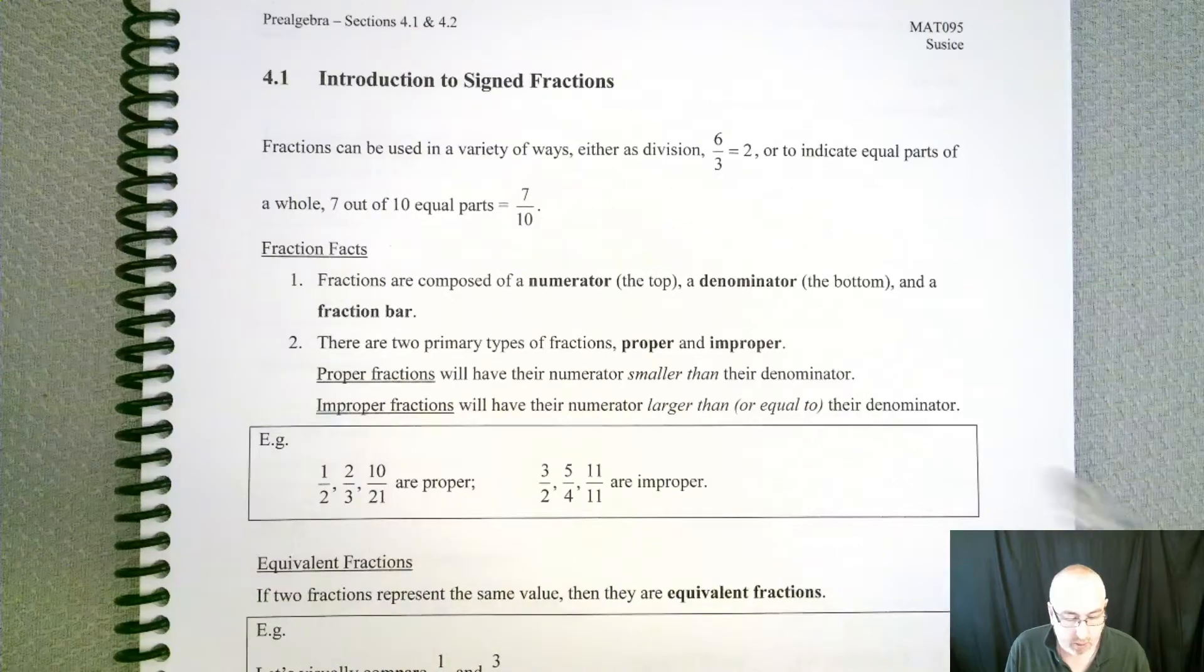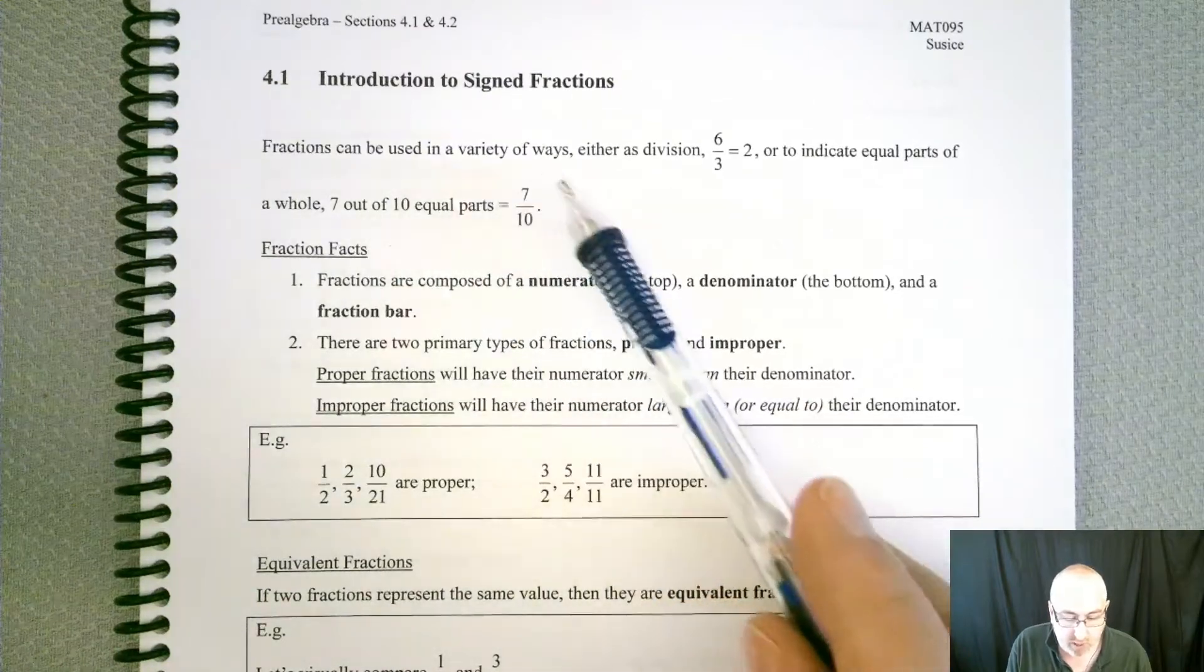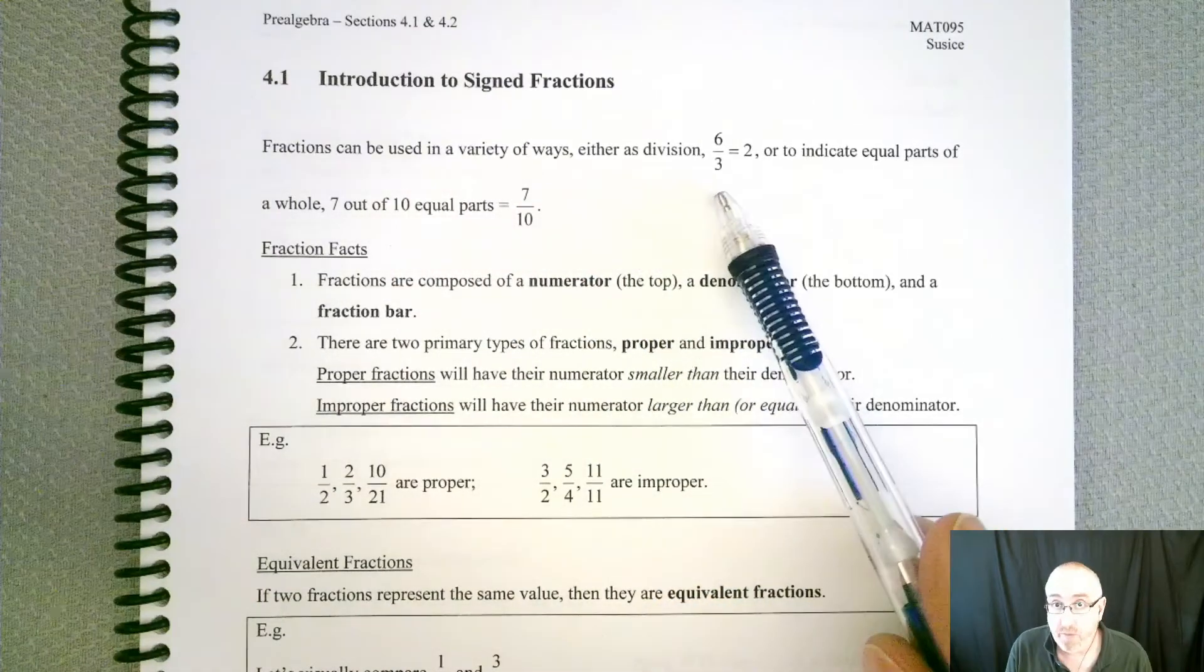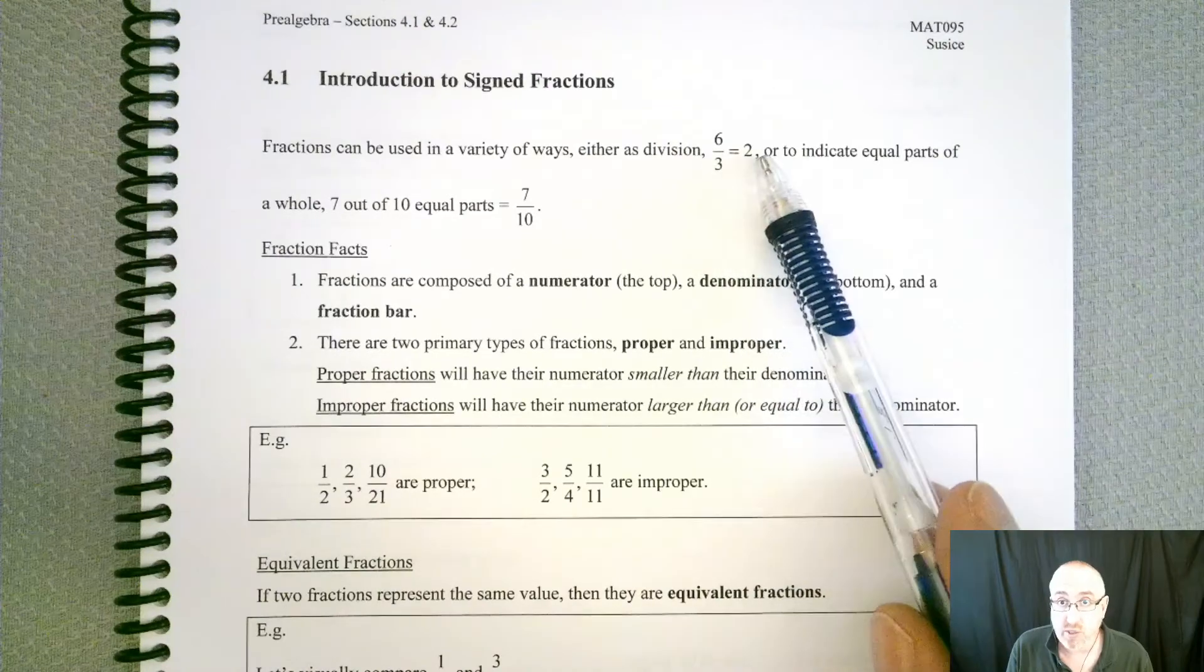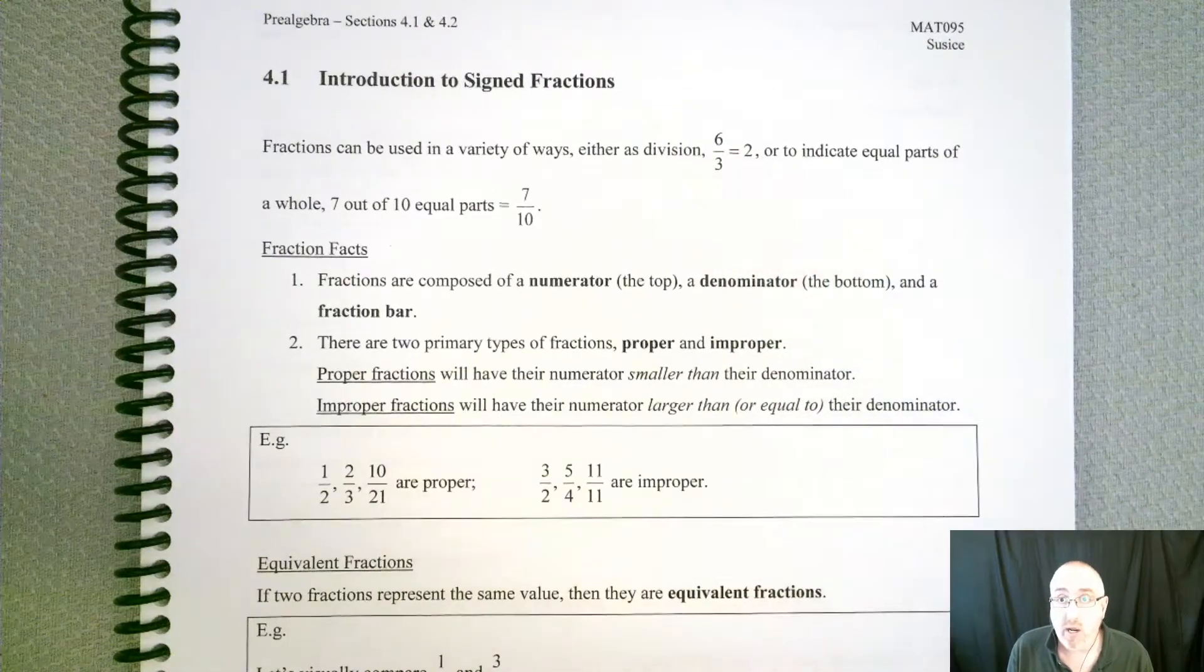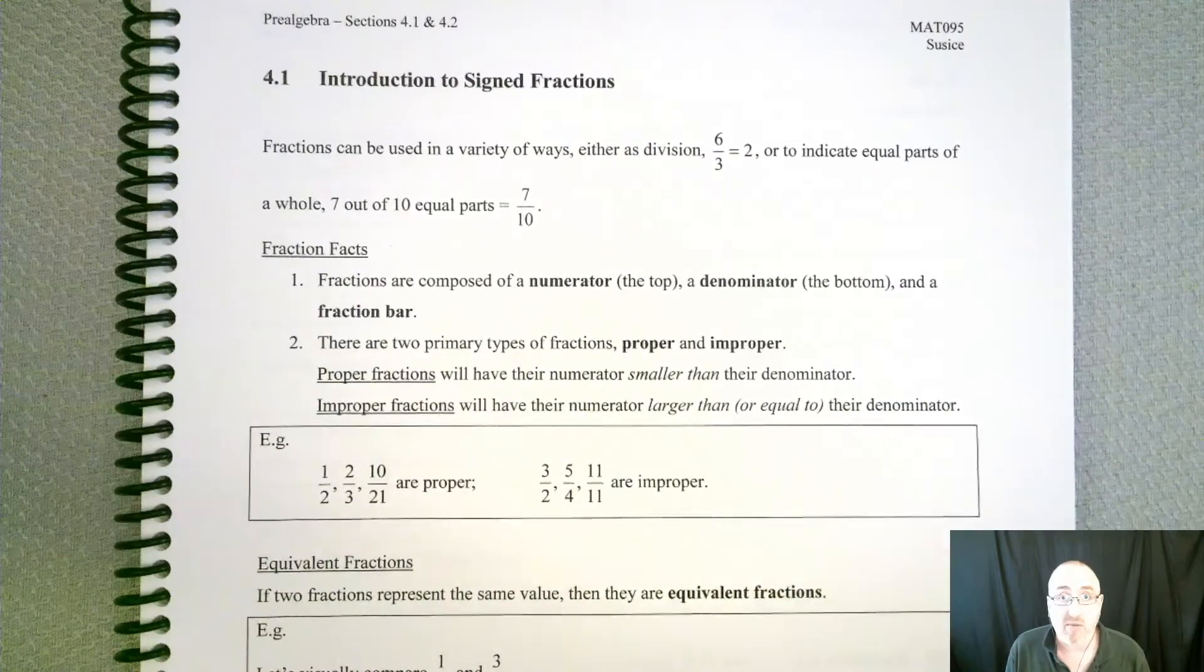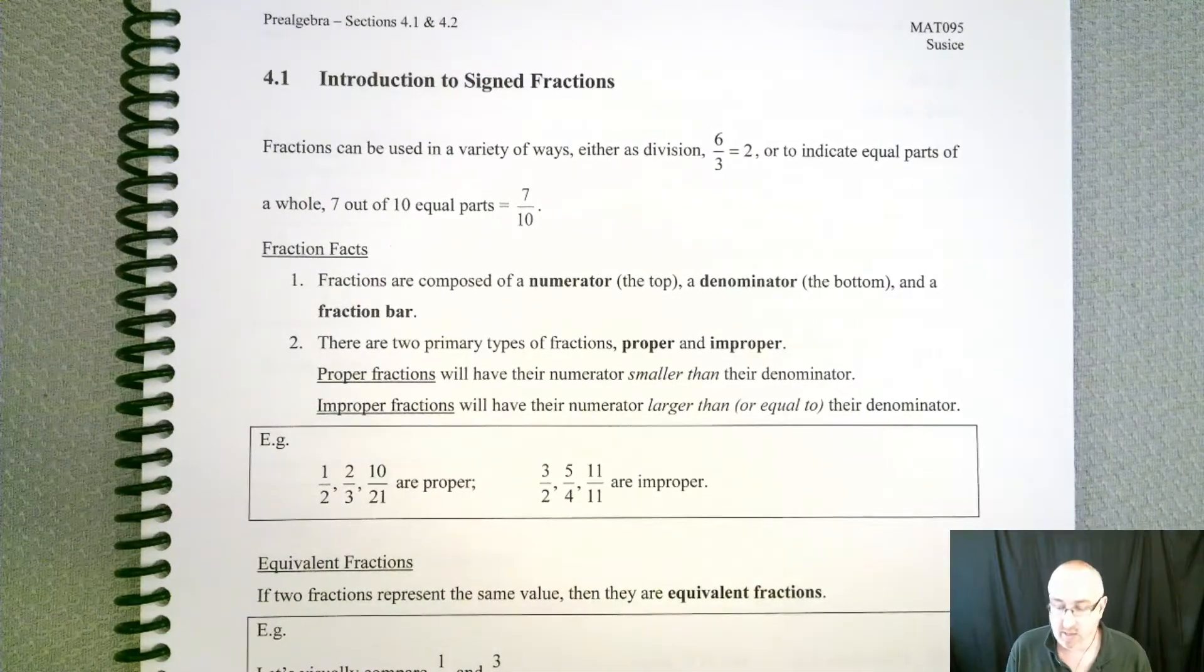Now, some background. Fractions can be used a variety of ways. We can use it as division, so 6 over 3 equals 6 divided by 3, which is 2, or to indicate equal parts of a whole. So 7 out of 10 equal parts is 7 tenths.